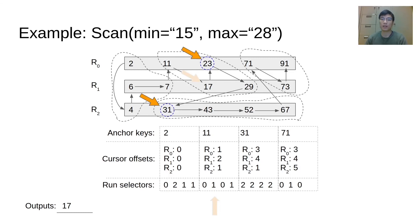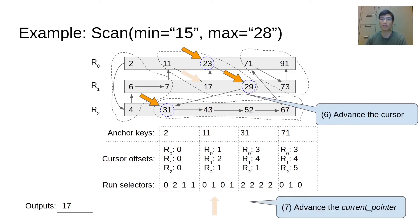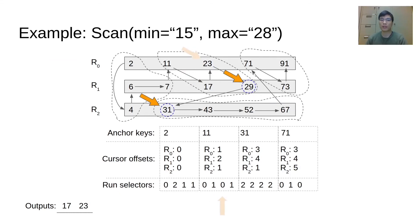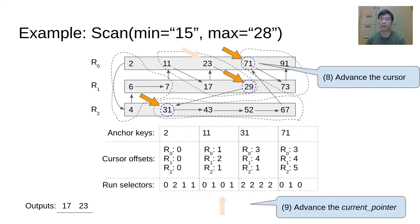We keep advancing the iterator to retrieve all the keys in the range. Similarly, the cursor of R1 will be advanced to point to key 29. Then, the iterator will point to the key under the cursor of R0, which is key 23. Key 23 will be copied to the user buffer. We keep advancing the iterator. The cursor of R0 will be advanced to point to key 71. Then, the iterator will point to the key 29 in R1, which is greater than the max key, so the range scan is finished.